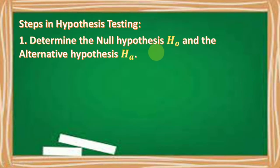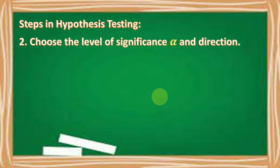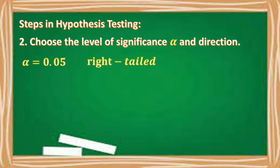Let us test the hypothesis using the steps. Number one, determine the null and alternative hypotheses. Our null hypothesis is mu is equal to 17, because this is the claim. The alternative hypothesis is mu is greater than 17, because the computed mean is 18. Number two, choose the level of significance: alpha is 0.05 and the direction given is right-tailed.